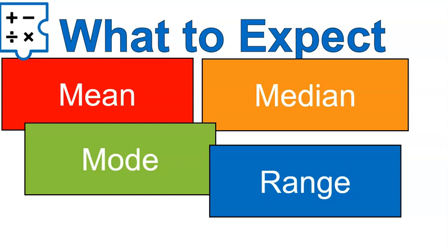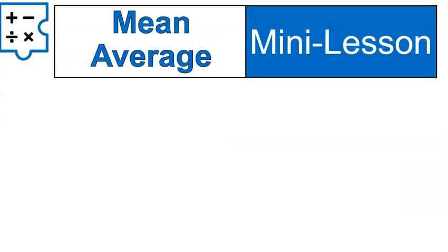All of these things are often called measures of central tendency. Well, not all of them. Range is just range. But those three, mean, median, and mode, are often called the measures of center, or the measures of central tendencies.